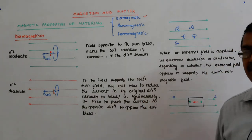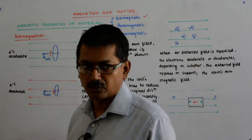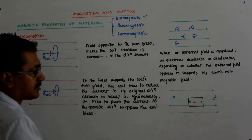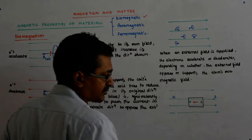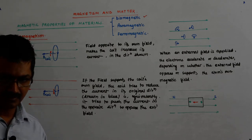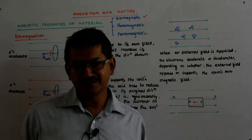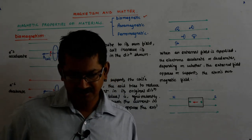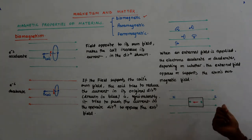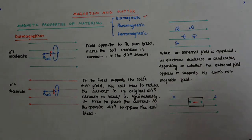Inside the material, the lines are from south to north; outside, it will be north to south. A student asked: it is going from here to here, so this should be north and this should be south — because magnetic field lines originate from north and terminate at south. The answer is that inside the material, the movement is from south to north, just as inside a magnet. Outside the material it will be north to south. This NS is that of the external field; this NS is that of the diamagnetic material.